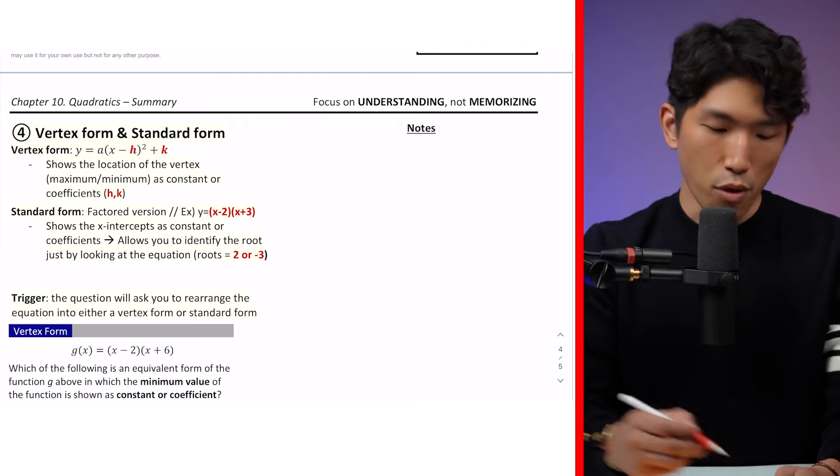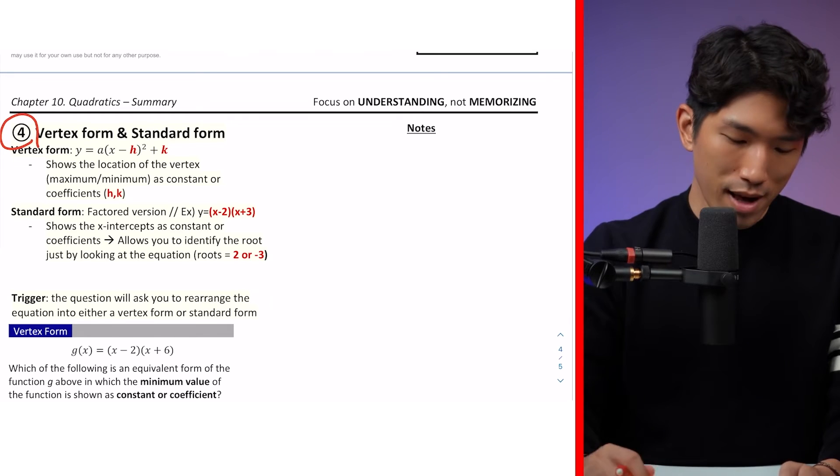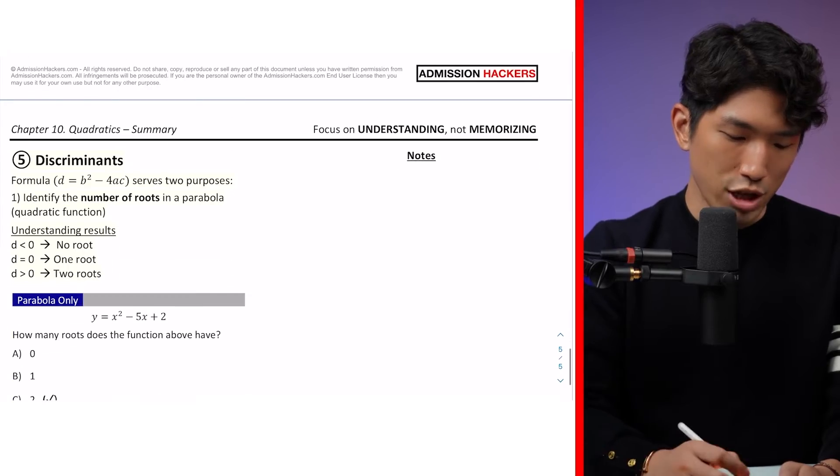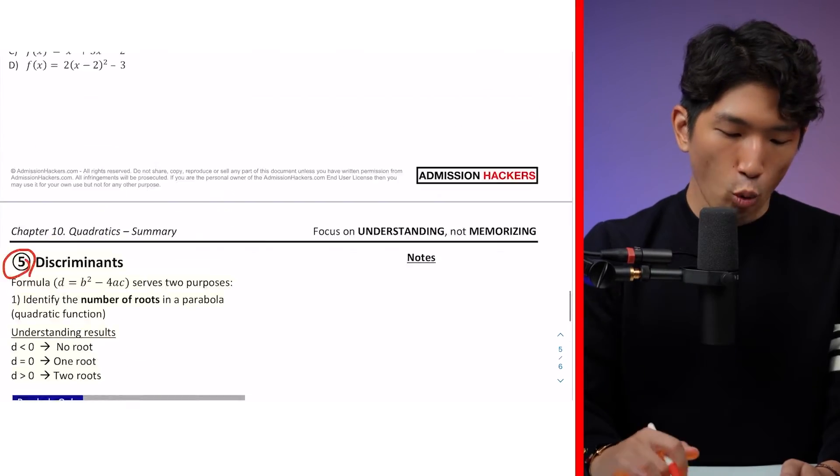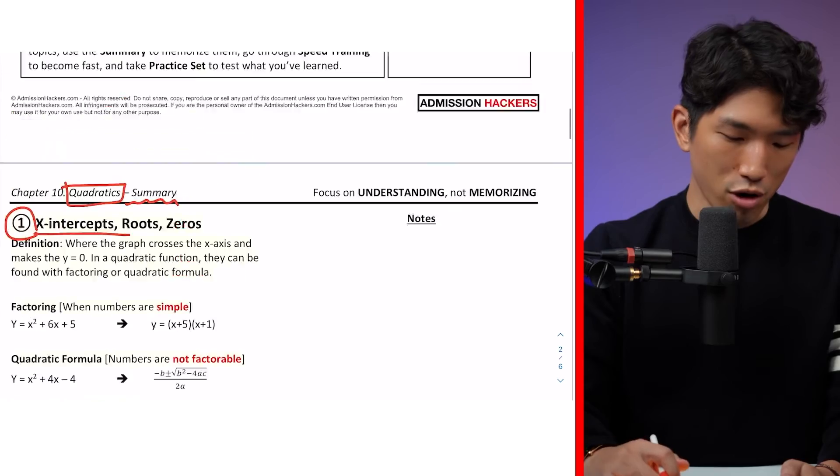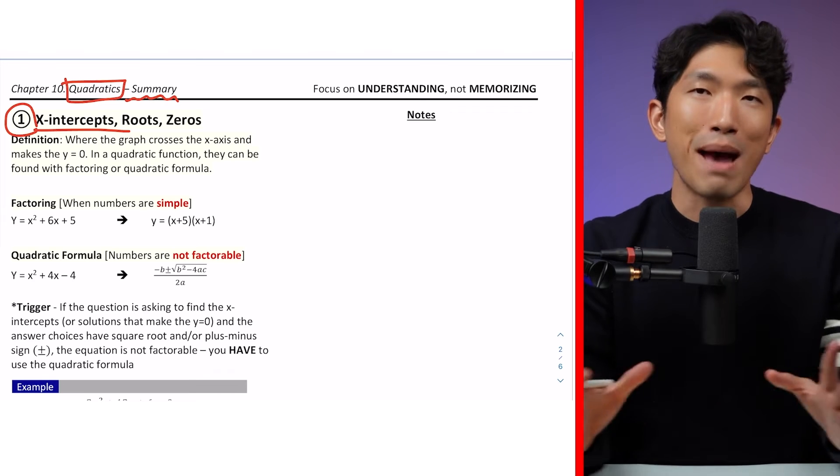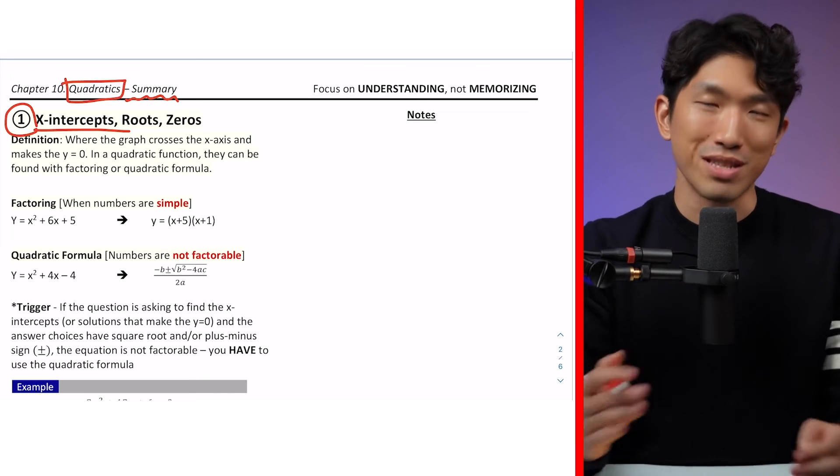There are two methods. And the fourth is going to be a vertex slash standard form for a parabola. And the last but not least is going to be discriminates. And for every single one of these subtopics for quadratics, you kind of have to have everything mapped out on how it works and when to exactly use it.